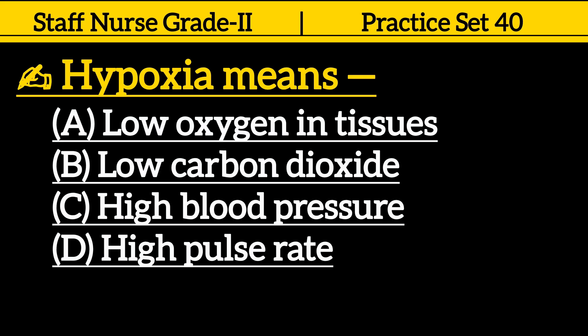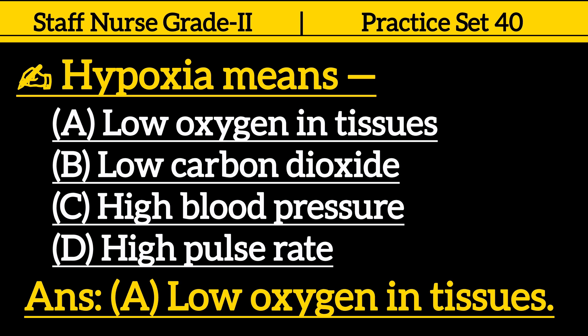Hypoxia means: Option A. Low oxygen in tissues. Option B. Low carbon dioxide. Option C. High blood pressure. Option D. High pulse rate. Correct answer is Option A. Low oxygen in tissues.